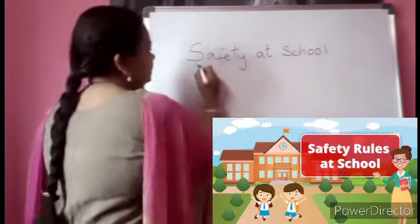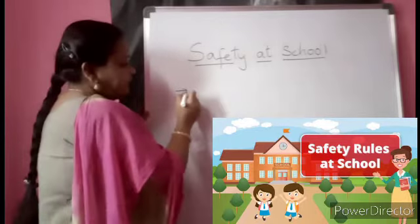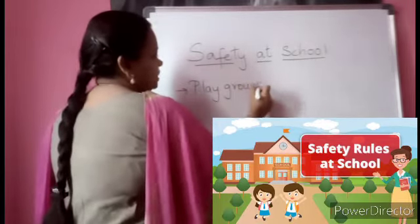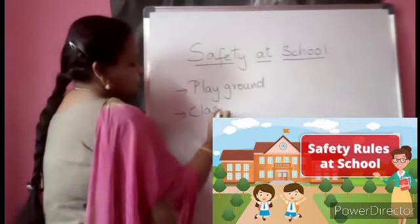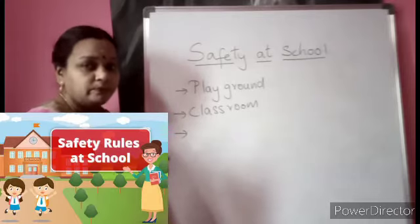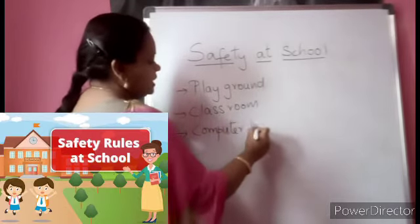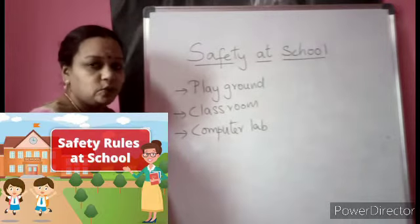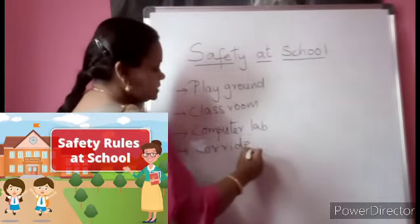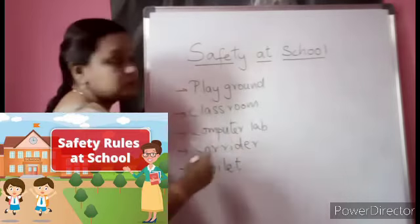As a part of that, first we will try to identify some of the places we are familiar with in our school. First, everybody's favorite — the playground. You all will be happy to be in the playground. And the next is your classroom, where you will sit and learn. And also sometimes you will go to the computer lab for your computer classes. And apart from the classroom and computer lab, the corridor is the place where you will walk to go to different places. And you will also be using the toilet.